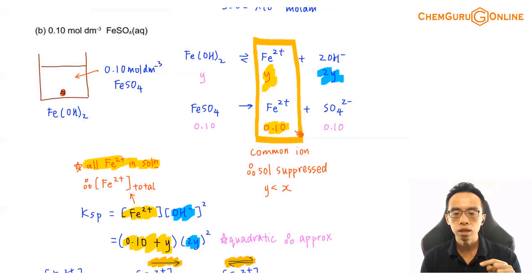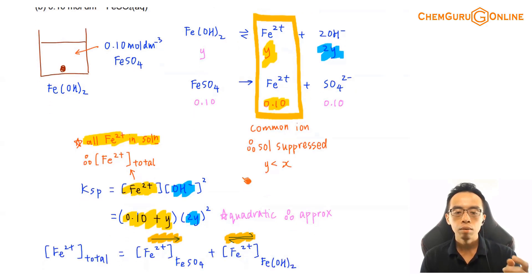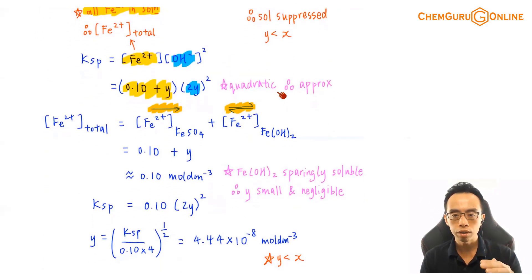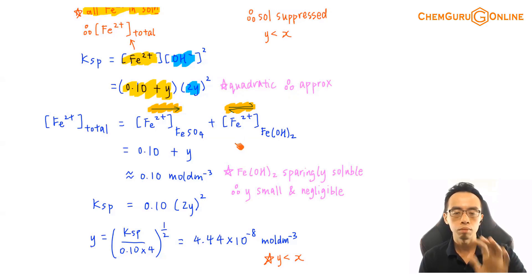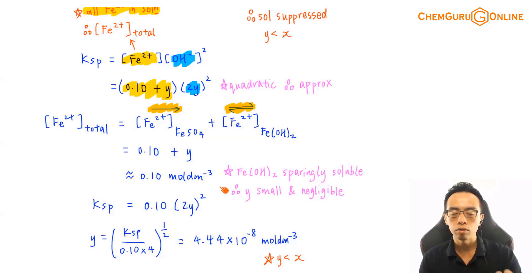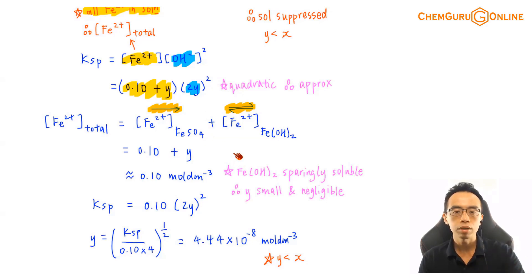Some schools impose the approximation earlier — straight away writing 0.1 + Y ≈ 0.1 and dropping Y. What I'm doing here is waiting until we encounter the quadratic equation so we can appreciate why the approximation is needed. Without it, we get a quadratic. In the syllabus, we are not required to solve quadratic equations. It doesn't matter when you impose the approximation, because the concept, approach, and method are exactly the same — it's just a question of when.